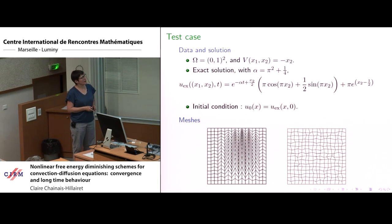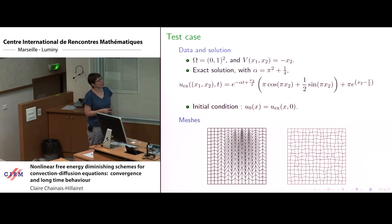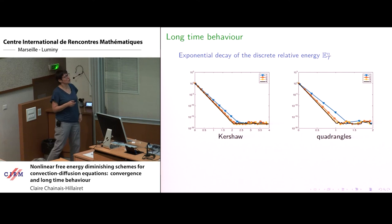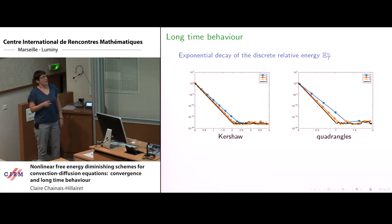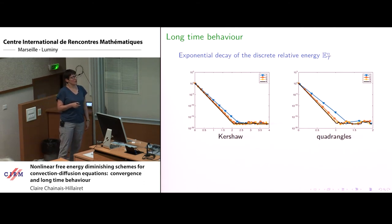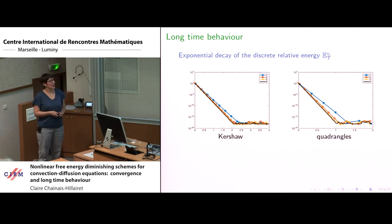For a test case on Kershaw and quadrangle meshes, we proved the scheme is order two and satisfies positivity. Looking at the long-time behavior, we really observe the exponential decay of the discrete relative energy towards zero, meaning the exponential decay of the solution towards the thermal equilibrium.